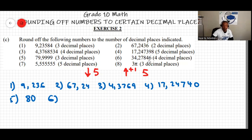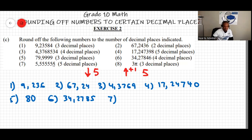Question six, to the fourth decimal place: look at the fifth decimal digit, which is 6 — more than 5, so increase the fourth decimal by one. The answer is 34.2785. Question seven, to the fifth decimal place: count to the sixth digit; it is 5, so we increase the fifth decimal by one. The answer is 5.55556.